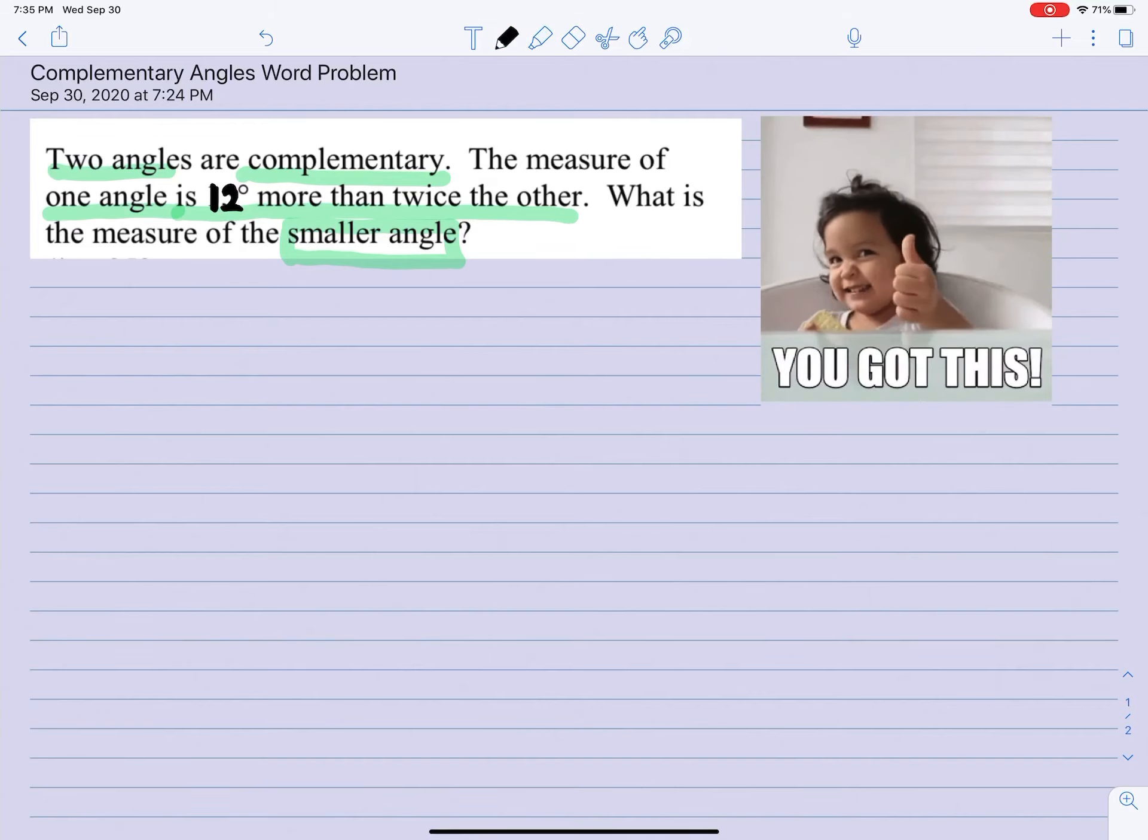First of all, let's take some notes on what we underlined. If two angles are complementary, that means their sum is 90 degrees.